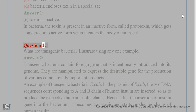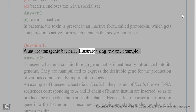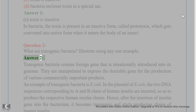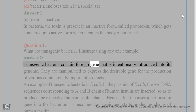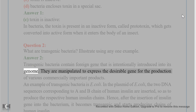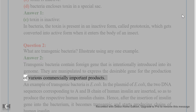Question 2. What are transgenic bacteria? Illustrate using any one example. Answer 2. Transgenic bacteria contain a foreign gene that is intentionally introduced into its genome. They are manipulated to express the desirable gene for the production of various commercially important products.